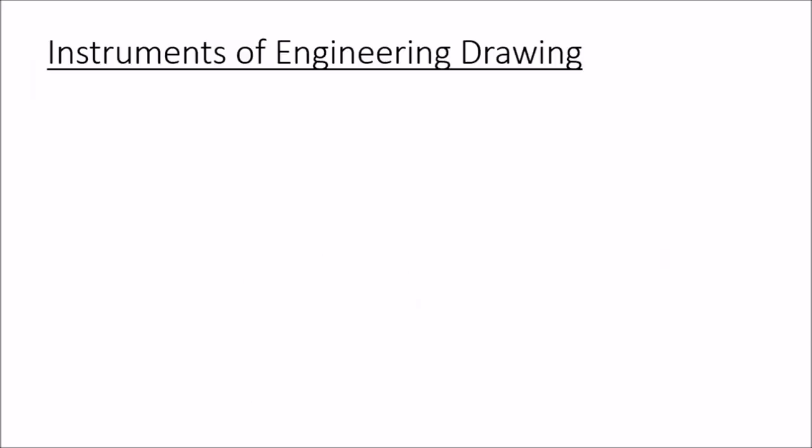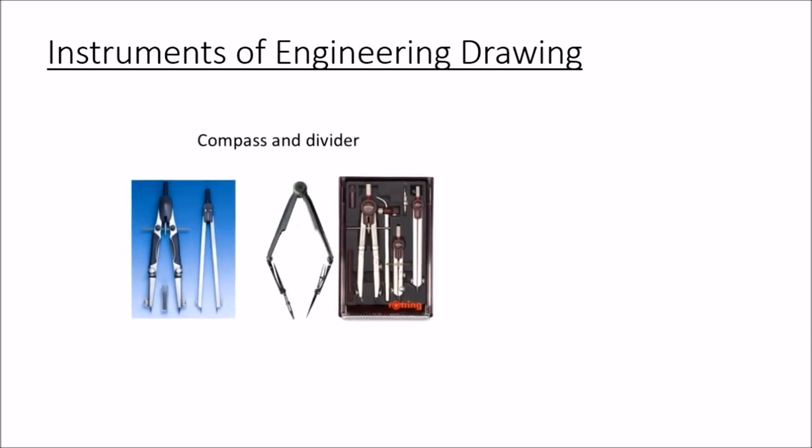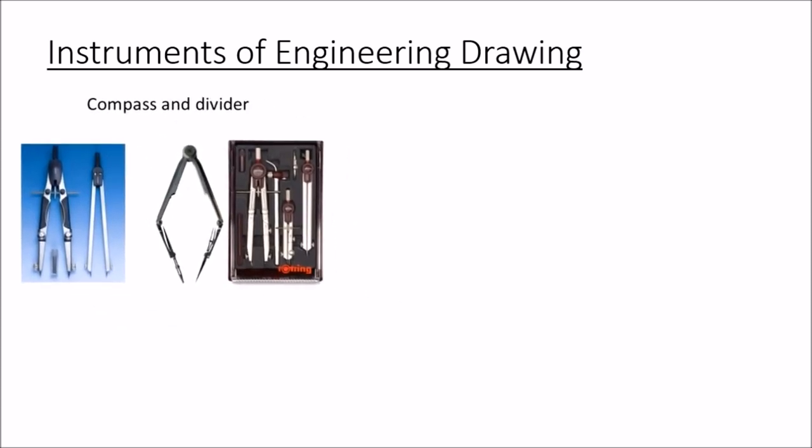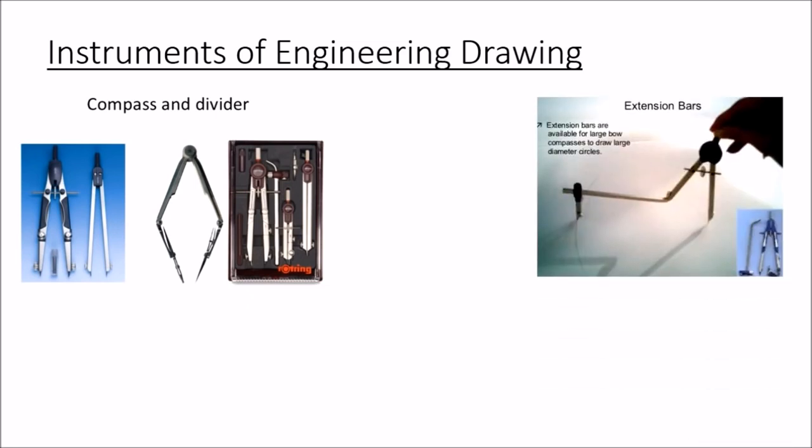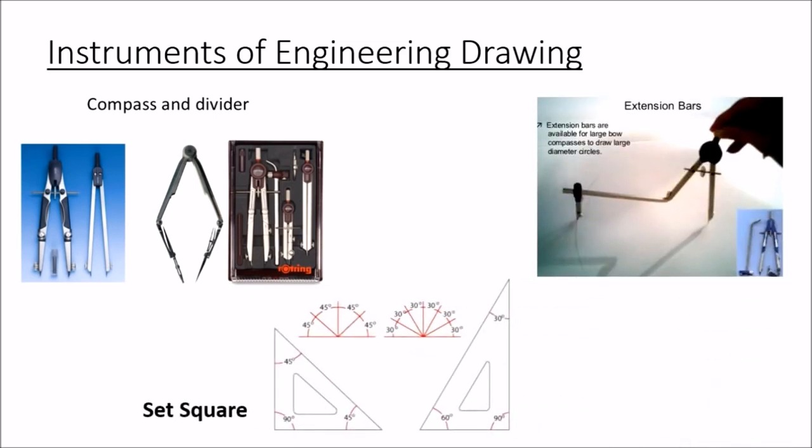Instrument box contains the other important tools to draft our engineering drawing: compass small and big, divider, protector, set square and length. The small compass is used to draw arcs less than 20 cm and the bigger compass for more than it. Or we can use extension bars for that purpose.